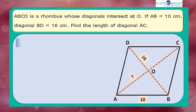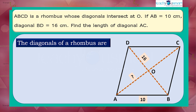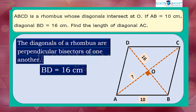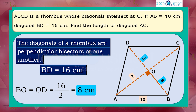We know that the diagonals of a rhombus are perpendicular bisectors of one another. We have BD equals 16 centimeters. Using this property, BO equals OD equals 16 divided by 2, equals 8 centimeters.